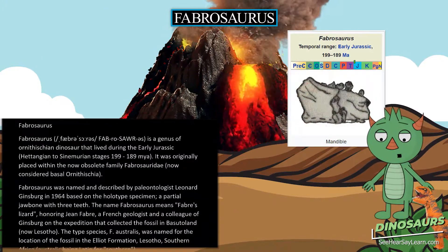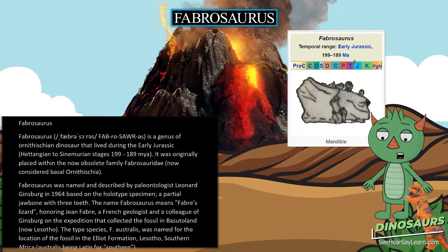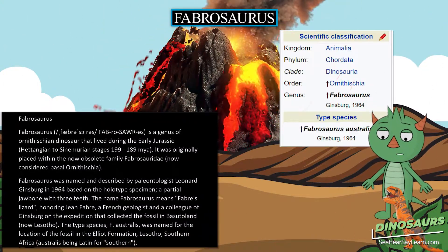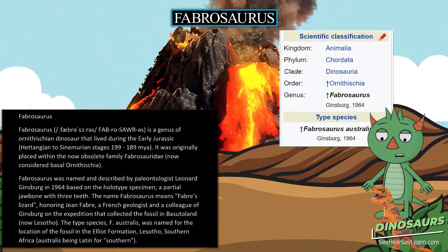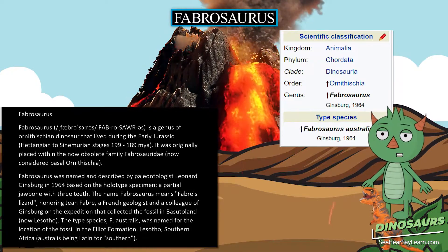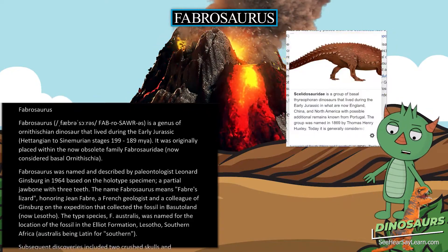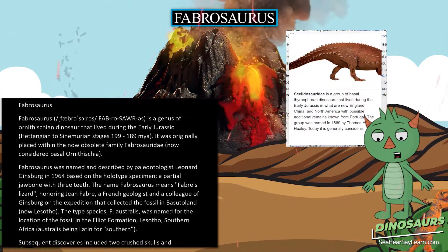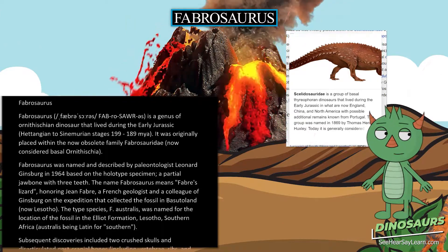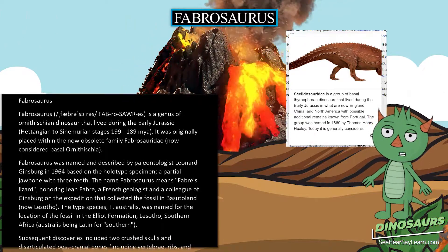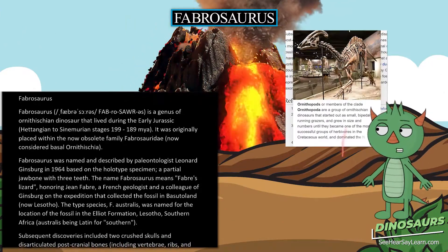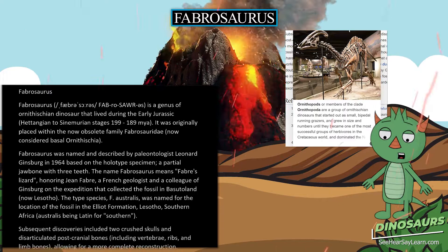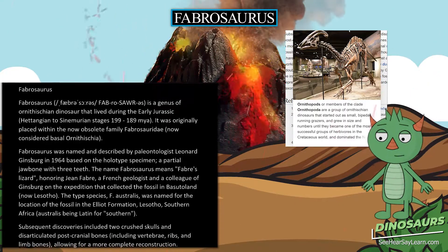Fabrosaurus is a genus of Ornithischian dinosaur that lived during the early Jurassic, through the Sinemurian stages, 199 to 189 Ma. It was originally placed within the now-obsolete family Fabrosauridae, now considered basal Ornithischia.